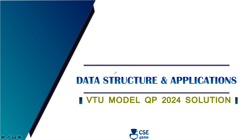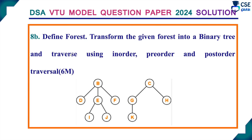Welcome to CSA Guru. In this session, we will discuss DSA VTU model question paper 2024 solution. Question number 8B: define forest, transform the given forest into a binary tree and traverse using in-order, pre-order and post-order traversal. This is a six mark question.